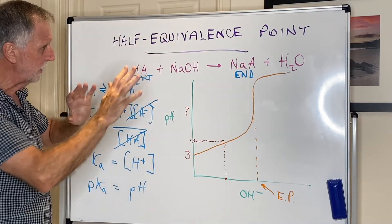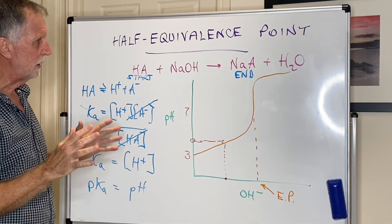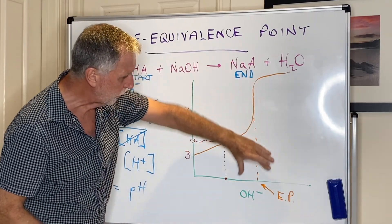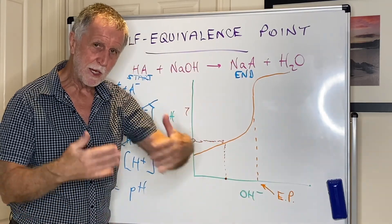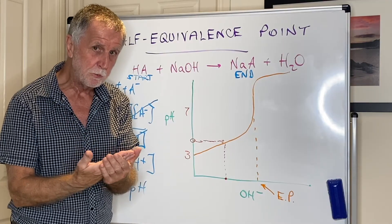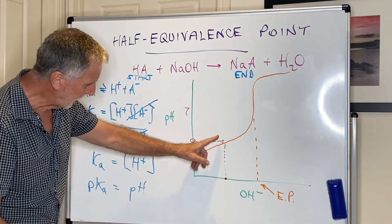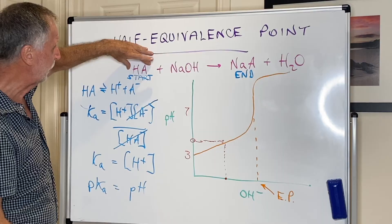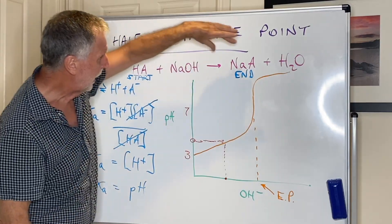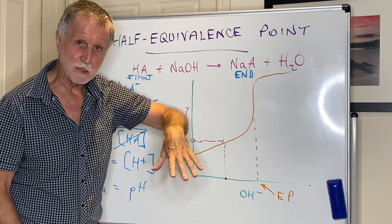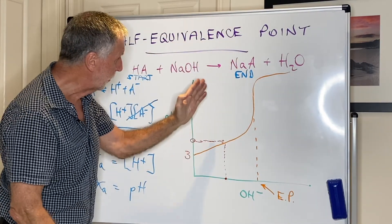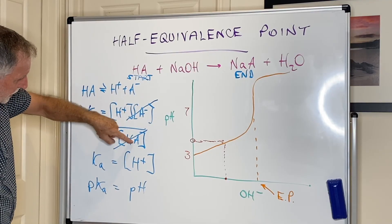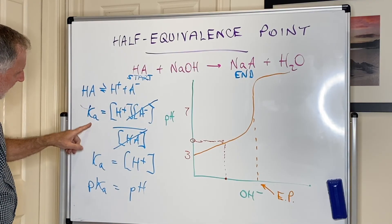The half equivalence point is a very possible exam question and could be worth quite a few marks. The equivalence point is where acid and alkali cancel out completely; the half equivalence point is where half has reacted and half hasn't. Under those conditions, Ka equals [H⁺], allowing you to find Ka from the pH on the titration curve.